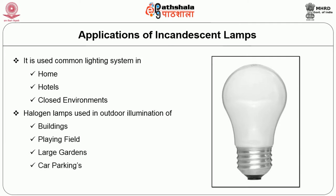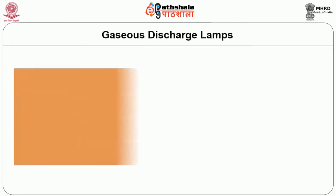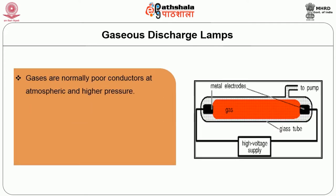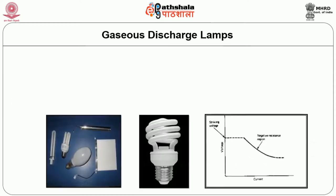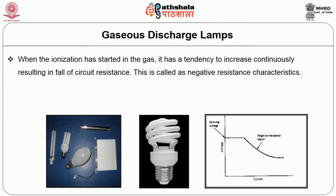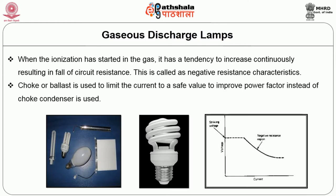Gaseous discharge lamps: gases are normally poor conductors at atmospheric and higher pressure. With the application of a suitable voltage called ignition voltage across two electrodes, there will be a discharge through the gas accompanied by electromagnetic radiation. The wavelength of this radiation depends on the gas, its pressure, and the metal vapor in the lamp. Argon gas, sodium, and mercury vapor gas are commonly used. When ionization has started in the gas, it tends to increase continuously, resulting in a fall of circuit resistance — this is called the negative resistance characteristic. A choke or ballast is used to limit the current to a safe value. To improve power factor, a condenser is used instead of a choke.